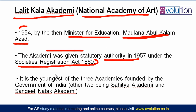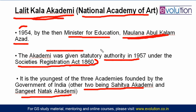There are two other academies related to art and culture — Sahitya Akademi and Sangeet Natak Akademi — and Lalit Kala Akademi is the youngest of the three. Sahitya Akademi and Sangeet Natak Akademi are both older than Lalit Kala Akademi.